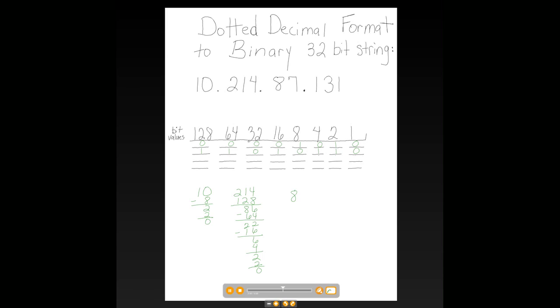87. First bit is turned off. Second bit, 64, turned on. If you subtract, that's 23. 32 would be turned off. 16, we will turn it on. Subtract it out. That leaves us with 7.